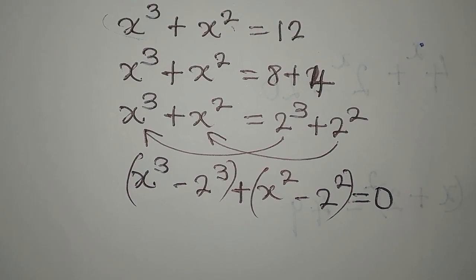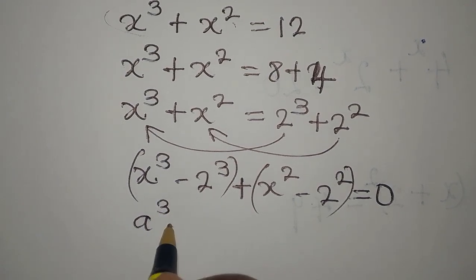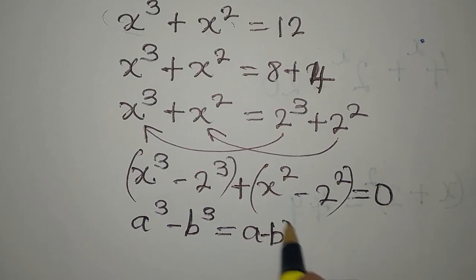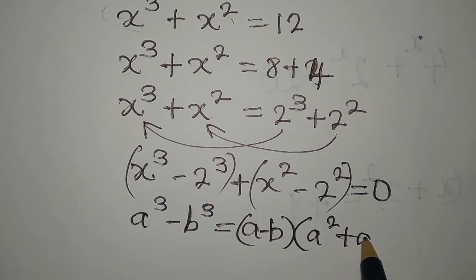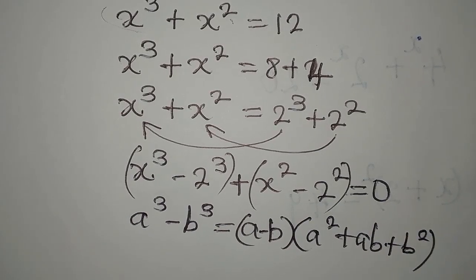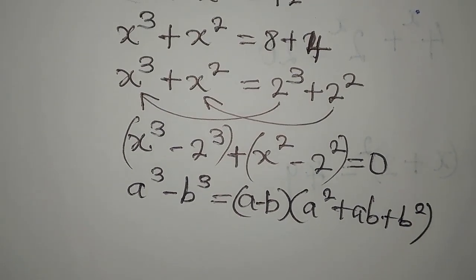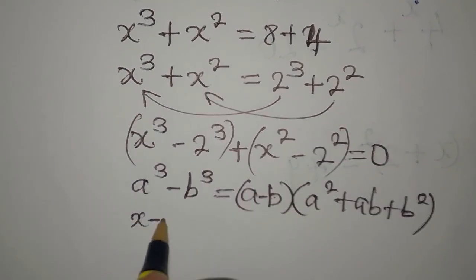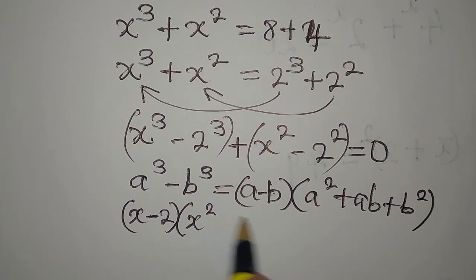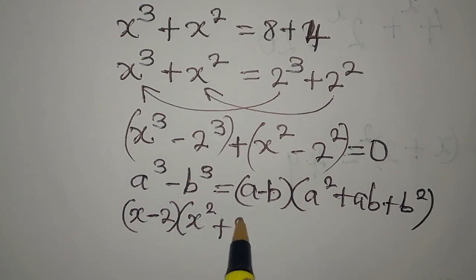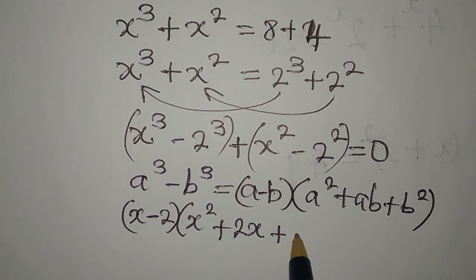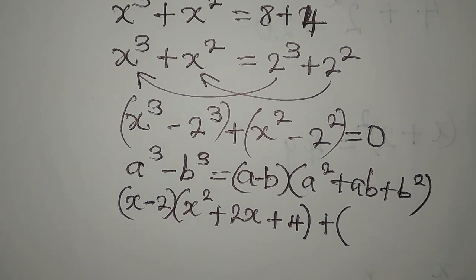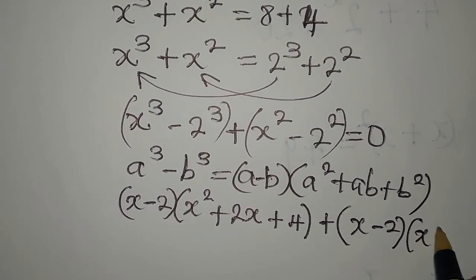Remember: difference of two cubes gives a³ - b³ = (a - b)(a² + ab + b²). Applying this to x³ - 2³ gives (x - 2)(x² + 2x + 4). For the difference of two squares, x² - 2² = (x - 2)(x + 2).